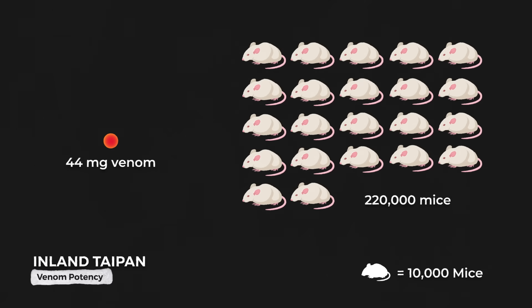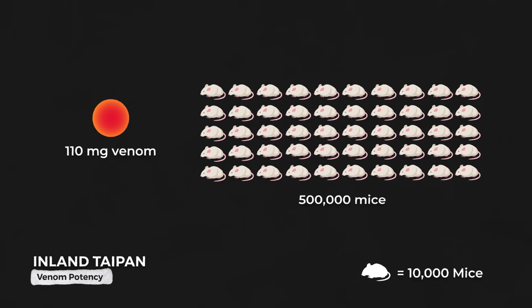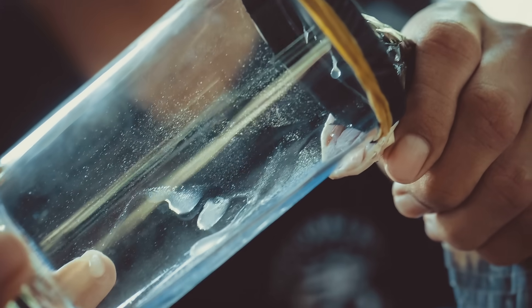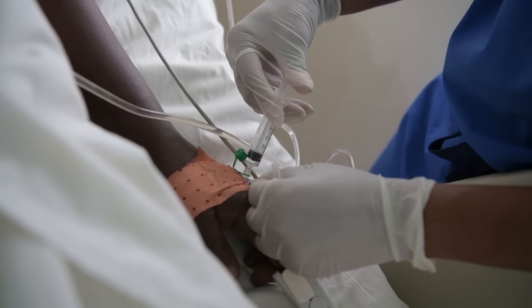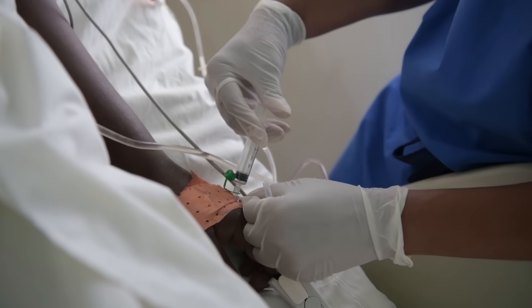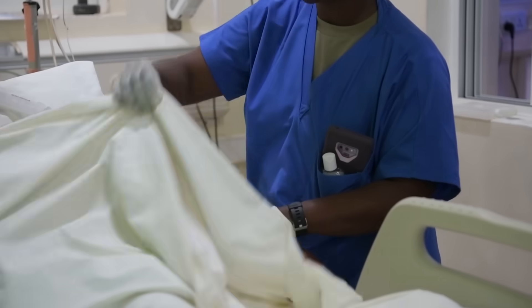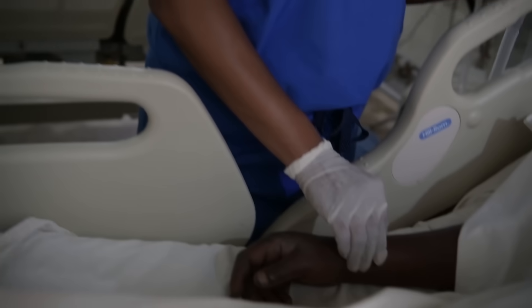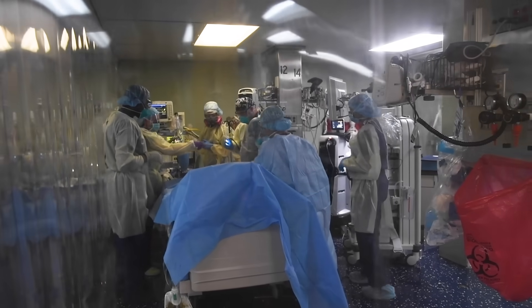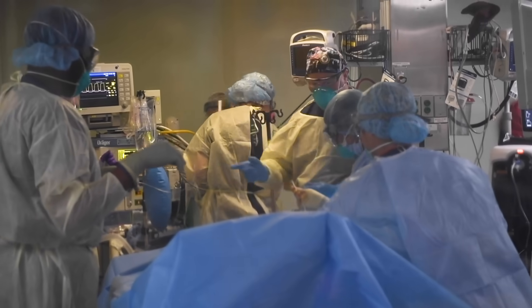And in some cases, inland taipans have been shown to inject over 110 milligrams of venom in a single bite. That's enough to kill half a million mice, or over 100 humans. Even a small bite from an inland taipan can cause permanent damage, and if you're not given the taipan antivenom within 45 minutes, you'll most likely bleed out from your wound, your kidneys will shut down, and your body will go into paralysis, leading to respiratory failure and death.